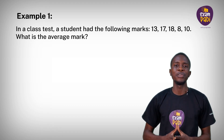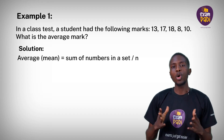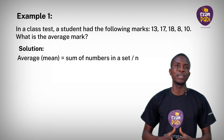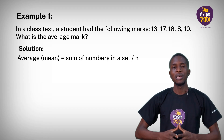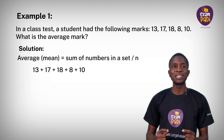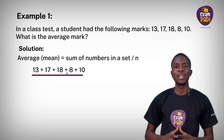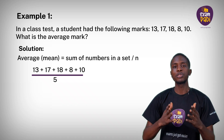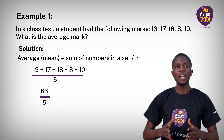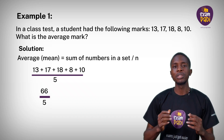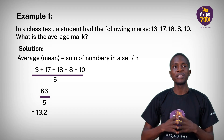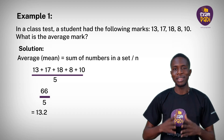What is the average mark? Solution: average, also known as mean, equals sum of numbers in a set divided by n. This equals 13 plus 17 plus 18 plus 8 plus 10 divided by 5. The sum of all the numbers gives 66 divided by 5, which equals 13.2. So we can say the average of the set of numbers is 13.2.